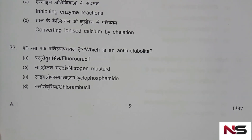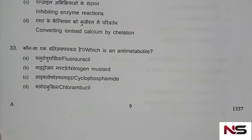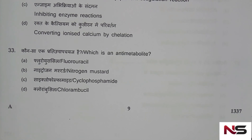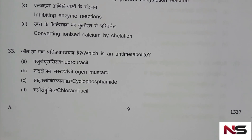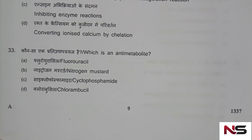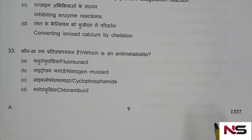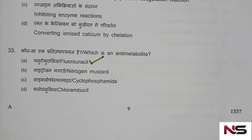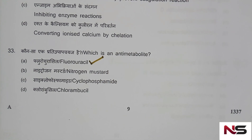Question 33: Which of the following is an antimetabolite? Options are: fluorouracil, nitrogen mustard, cyclophosphamide, chlorambucil. For this exam you need to study drug classification very well. This question comes from classification of cancer drugs. The correct answer is option A — fluorouracil, which is an antimetabolite.